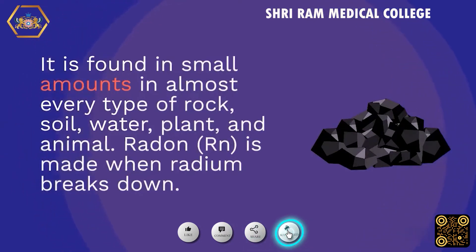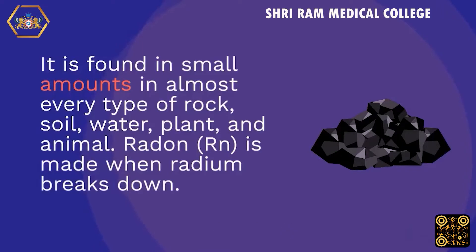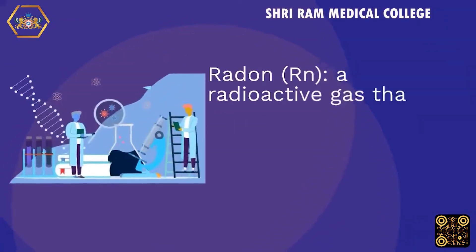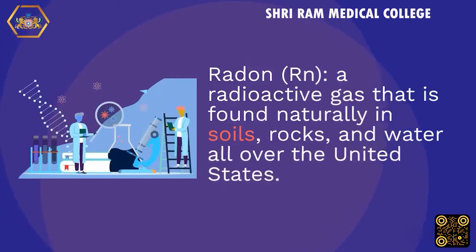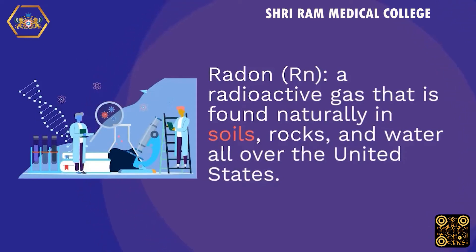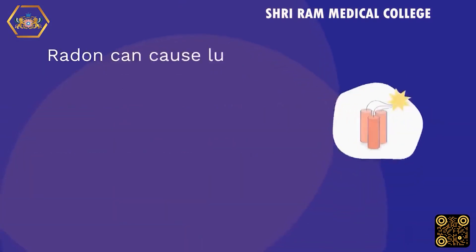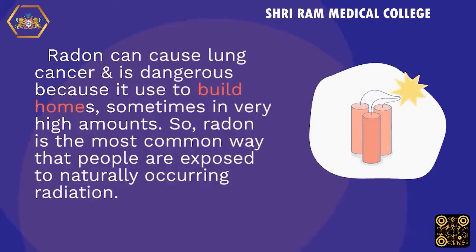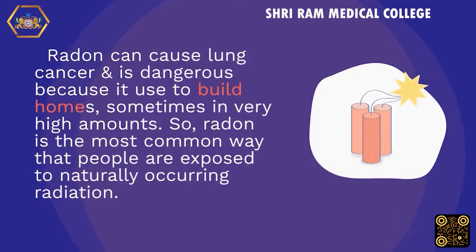Radon (Rn) is made when radium breaks down. Radon is a radioactive gas that is found naturally in soils, rocks, and water all over the United States. Radon can cause lung cancer and is dangerous because it can build up in homes, sometimes in very high amounts. Radon is the most common way that people are exposed to naturally occurring radiation.